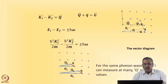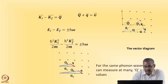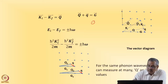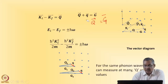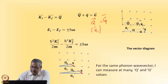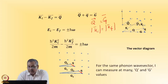When we did diffraction experiments for structure, if you remember, we wrote that momentum transfer should be equal to a reciprocal lattice vector — that is what the Ewald construction was all about. And for a diffraction experiment, Ki was equal to Kf in magnitude, because there is no energy transfer.